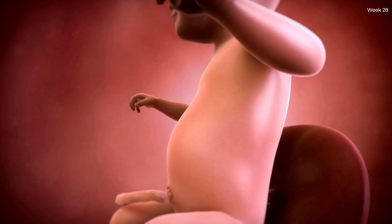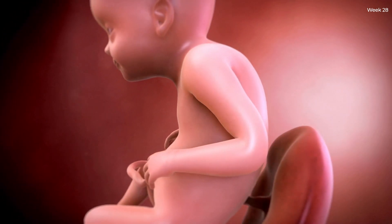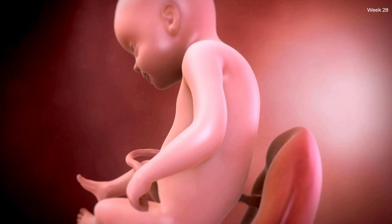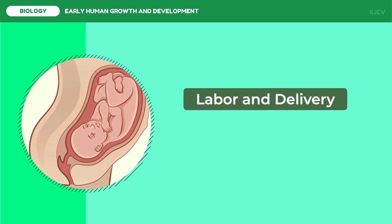The third trimester begins in week 28 and lasts until birth — from the 7th to the 9th month of pregnancy. By week 31, the baby receives signals from all five senses, perceiving light and dark and tasting what the mother eats, and can listen to the mother's voice. Around week 34, the baby's body turns southward into a heads-down, bottom-up position. By week 37, pregnancy is considered full term. On average, prenatal growth and development lasts 40 weeks. Labor and delivery ends the prenatal period, with the baby delivered through normal or cesarean delivery.